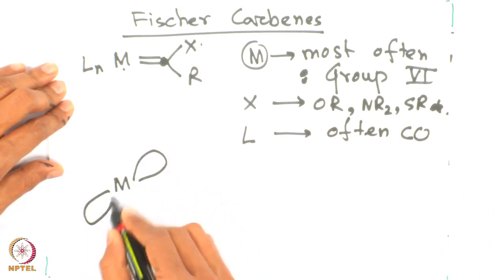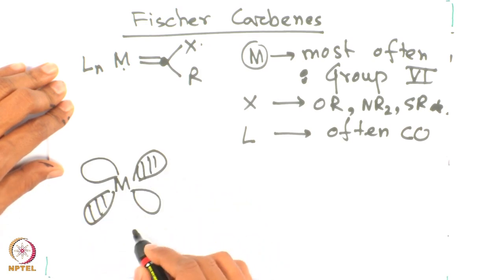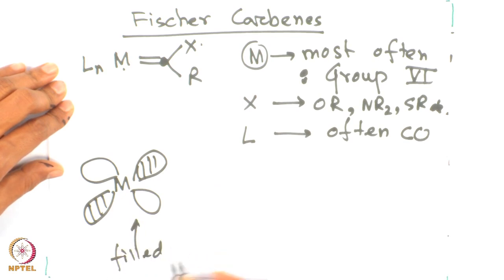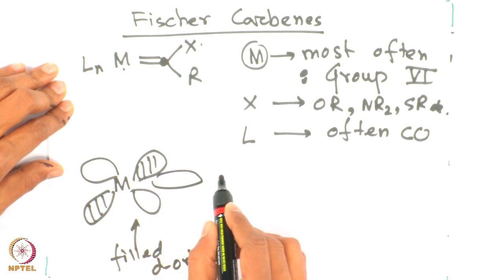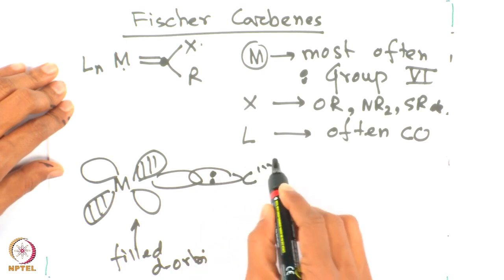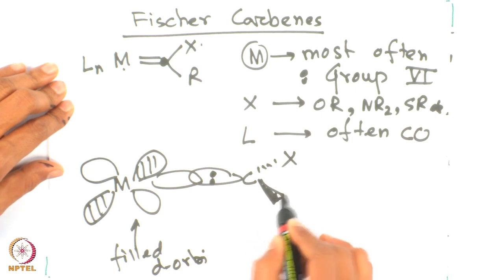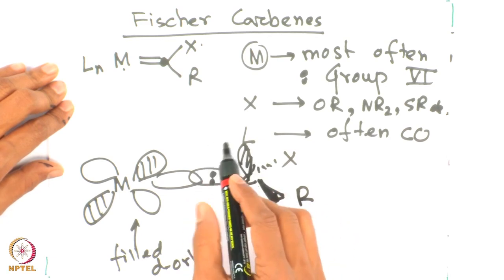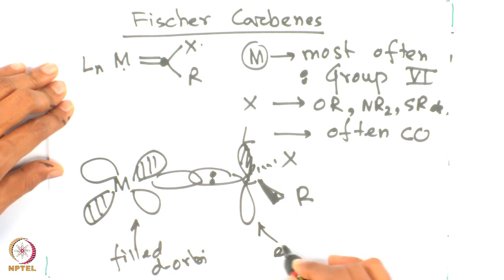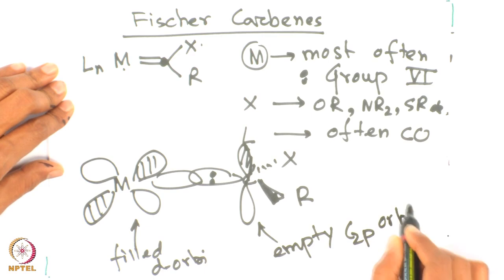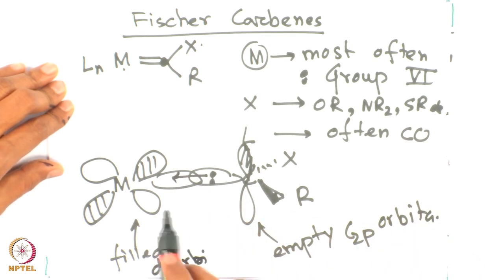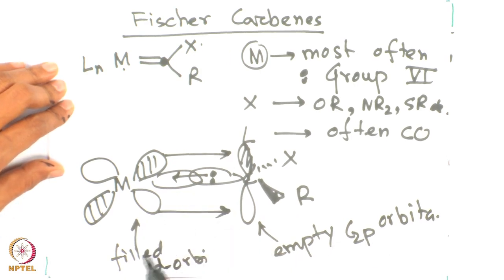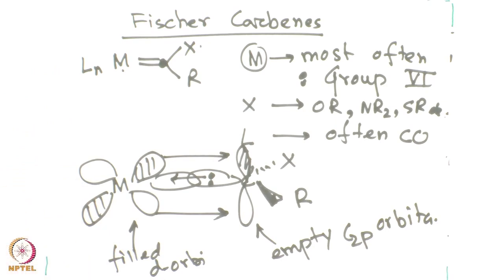If you look at the metal electronic structure, there is a filled d orbital on the metal. It can interact with the carbene — there is a lone pair on the carbene, and X and R are on the carbene center. The carbon has an empty C 2p orbital. There is donation from the lone pair of the carbene into the metal orbitals, and the filled d orbital donates electrons back into the empty C 2p orbital. That is the interesting part: carbene donates two electrons into the metal, and the metal d orbitals interact with the empty C 2p orbital.